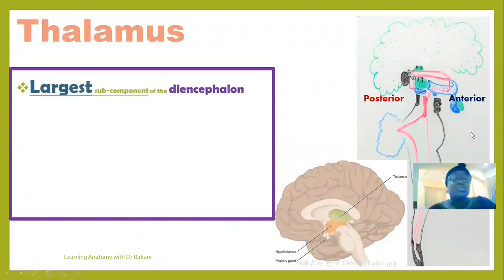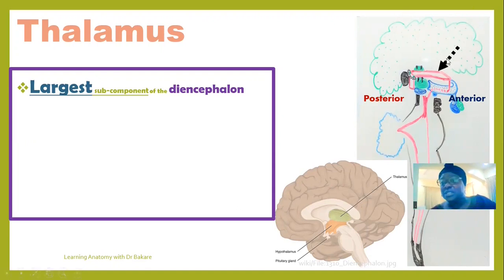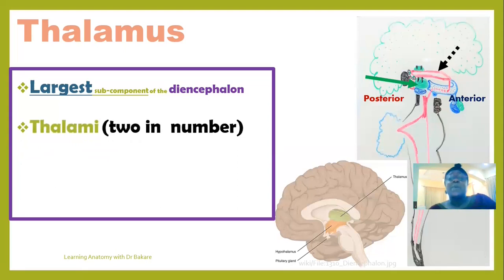The thalamus is the largest structural component of the diencephalon. The diencephalon is positioned around the third ventricle, and a number of structures located around the third ventricle are collectively referred to as the diencephalon. The thalamus is one of these structures and is the largest. Thalami are two in number — we have one on the right and one on the left.